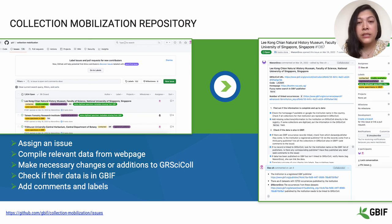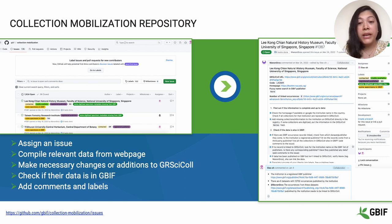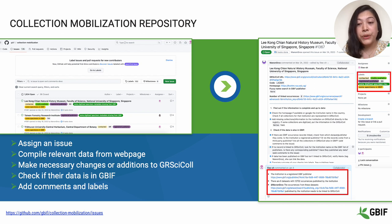The work begins with one of us assigning an issue or institution to work on. We then compile relevant data about that institution, their collections, and relevant tasks by looking up their web pages and other online sources. Based on the information gathered, we make changes or add information in the institution's GRSciColl page. We also find out whether the institution is already a GBIF publisher and if their collection data has been mobilized in GBIF. Lastly, we note our findings in the issue by adding comments and assigning appropriate labels.